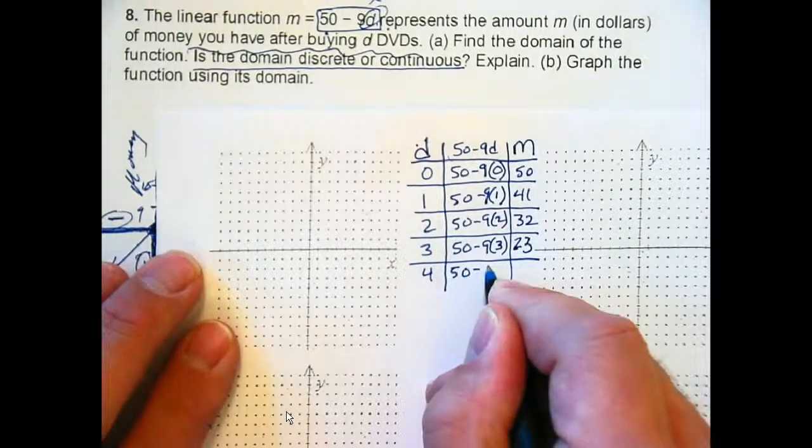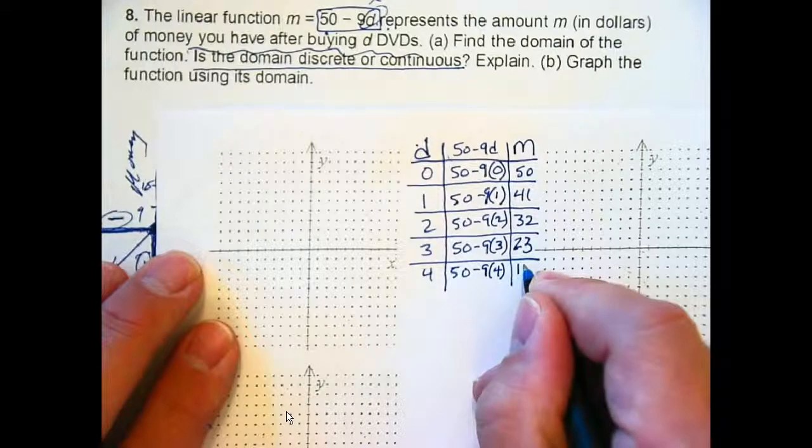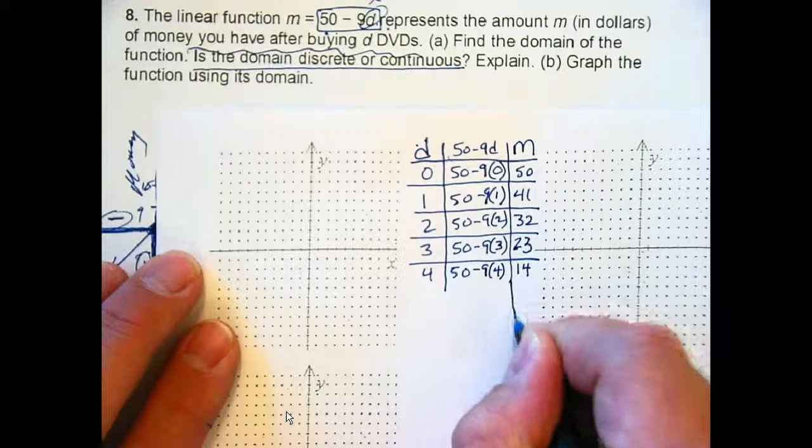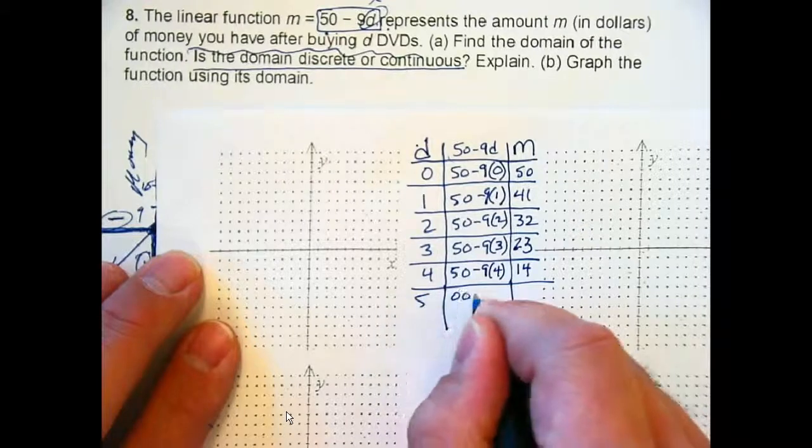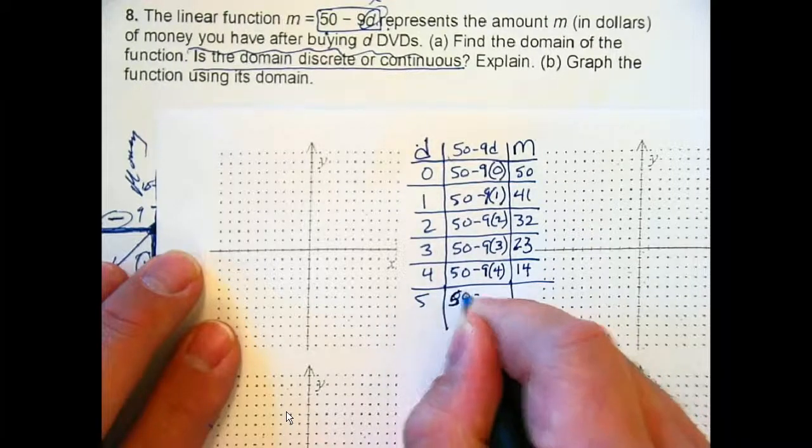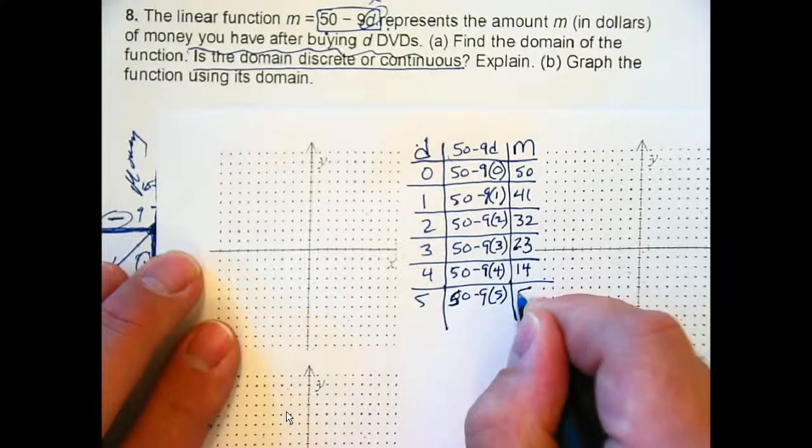Can we buy four? Yes. And obviously we're not taking the account tax here. But you're now down to? 14. Can I buy five? Yeah. You're now down to? Five. Can I buy six?